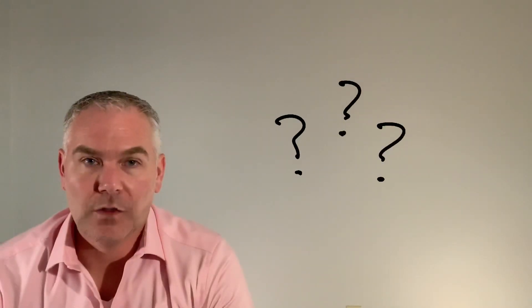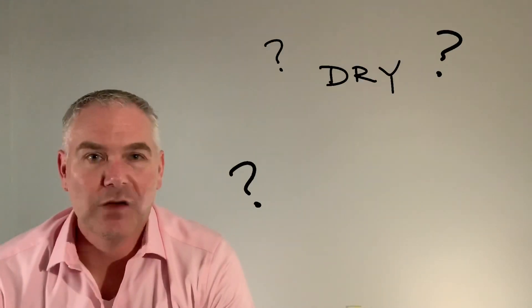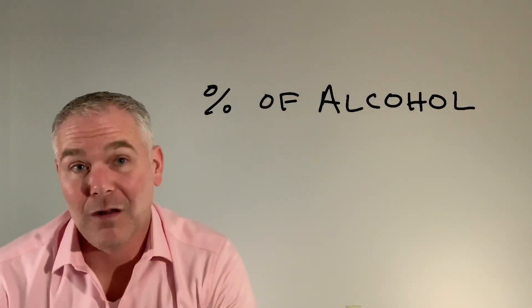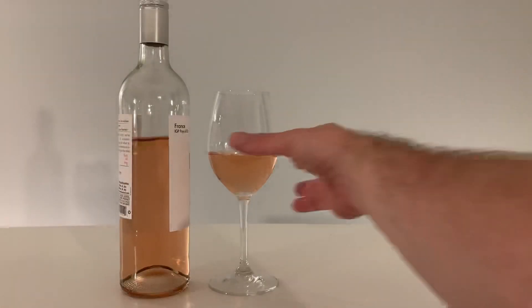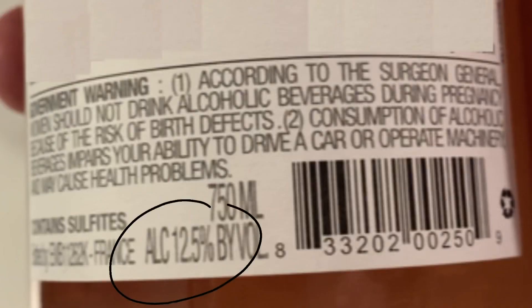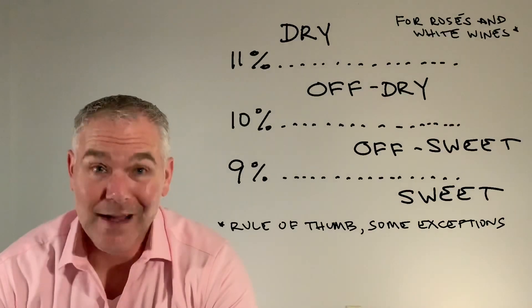Most wines won't tell you how much sugar they have in them, or whether they're dry, sweet, or off-dry. They don't have to. But what they do have to do is tell you the percentage of alcohol within the bottle. So let's do some investigating. This rosé that I've been working on — 12.5%. That's a high alcohol. That's dry.